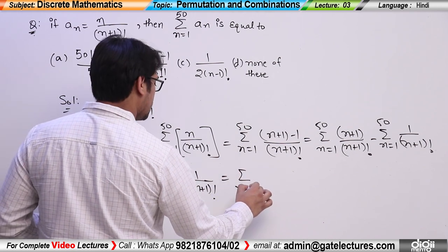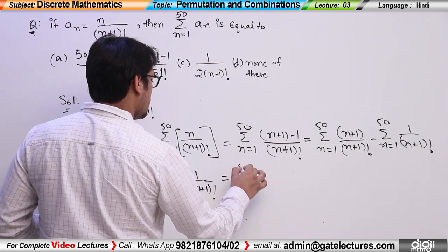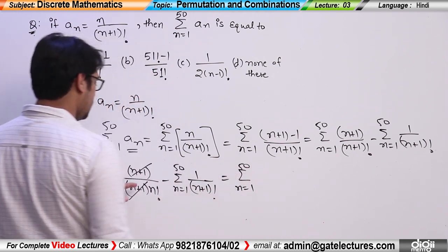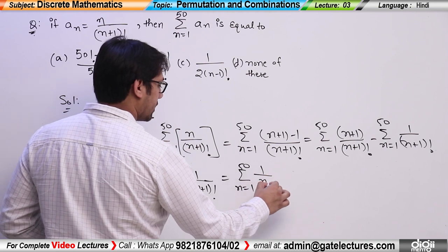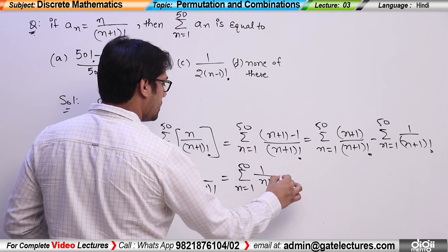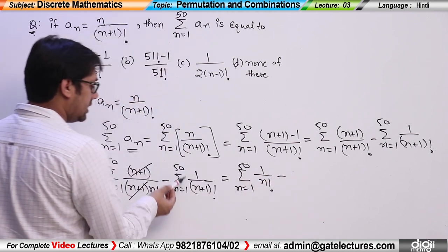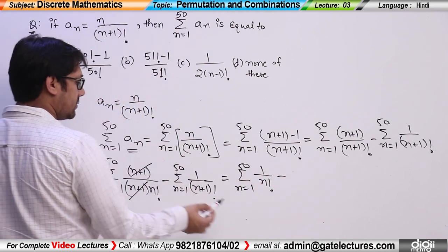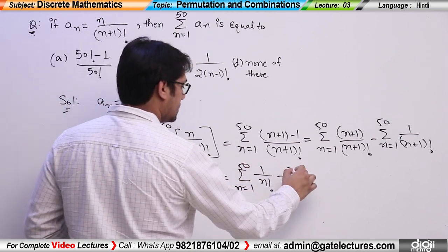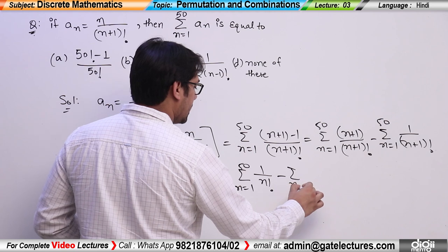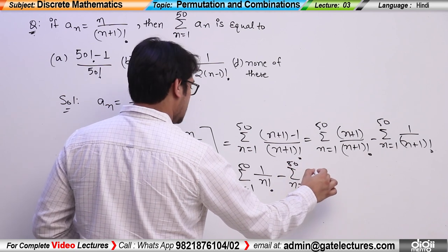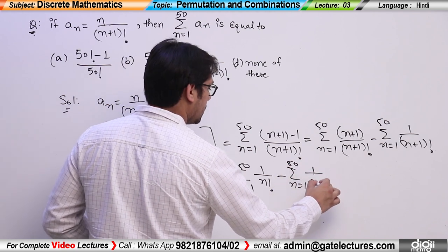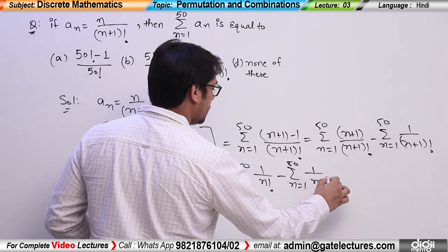This simplifies to: summation from n=1 to 50 of 1/n! minus summation from n=1 to 50 of 1/(n+1)!. Okay?